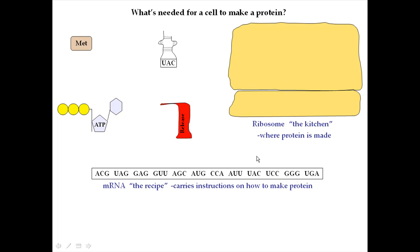Each individual ribosome is actually made up of two parts: a large subunit and a small subunit. Ribosomes are made up of a mixture of proteins and RNA — specifically a type of RNA called ribosomal RNA, or rRNA. It's called ribosomal RNA because it's RNA that's found in ribosomes.